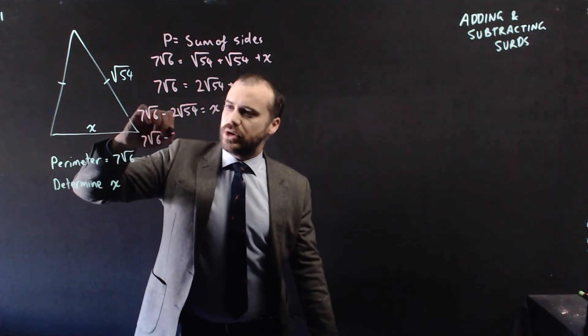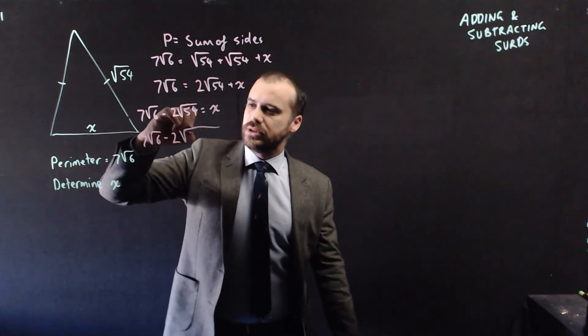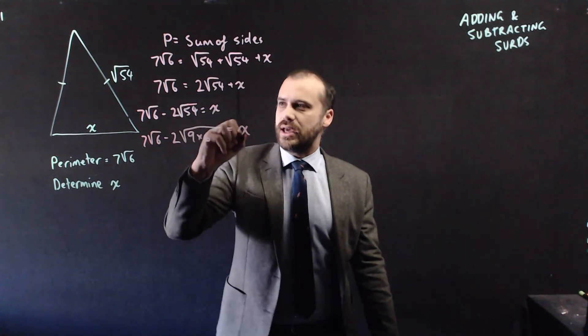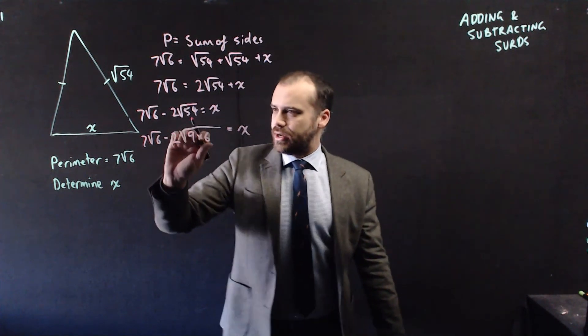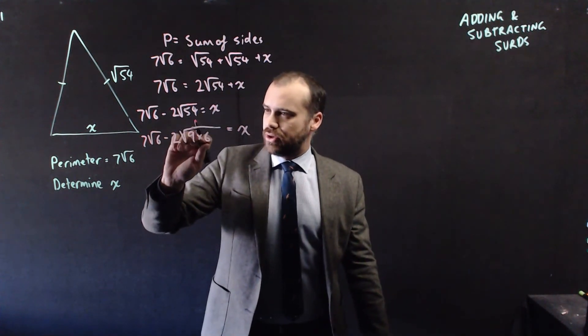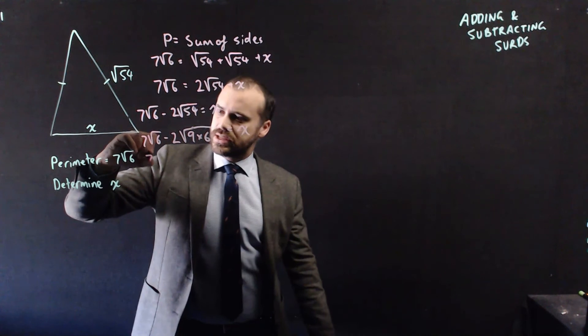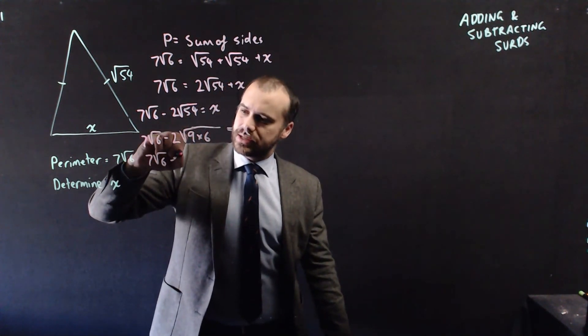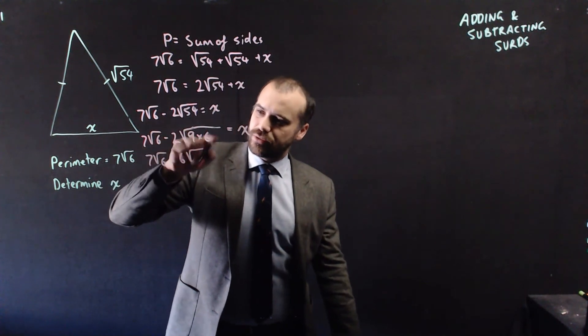7 root 6 minus 2 root 9 times 6 equals x. My equal signs aren't lining up. It's quite rude. Alright, our 3 comes out. 9 becomes a 3 when it comes out. So we get 7 root 6 minus 2 times 3 root 6. And then that root 6 is left over.